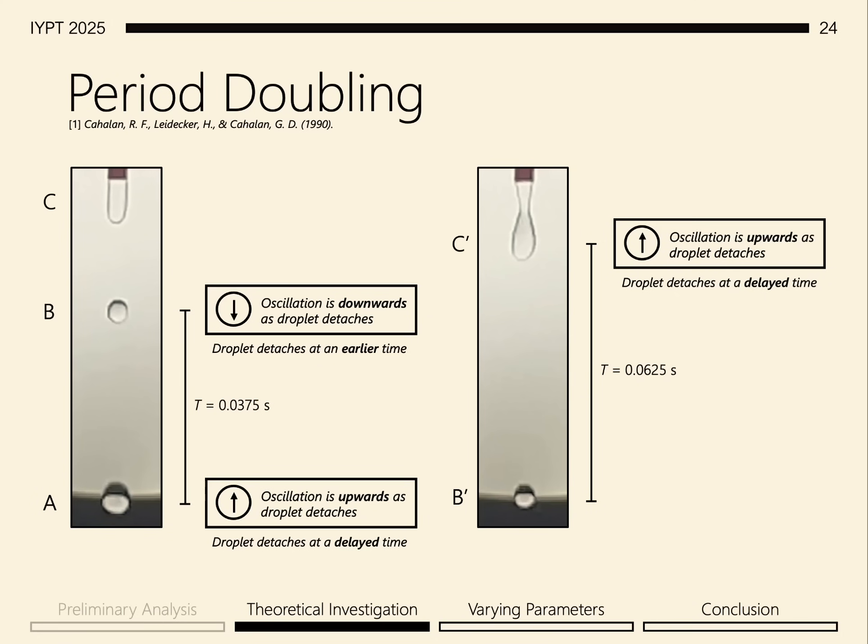The alternation between droplets coming out earlier than expected and later than expected results in this kind of period doubling, where every two drops is one cycle.